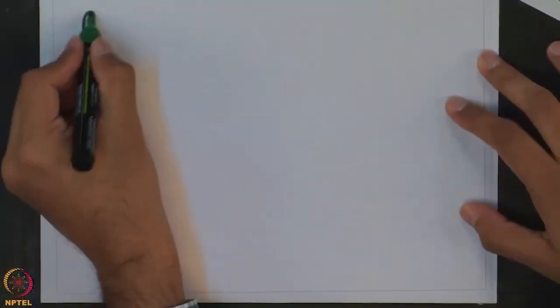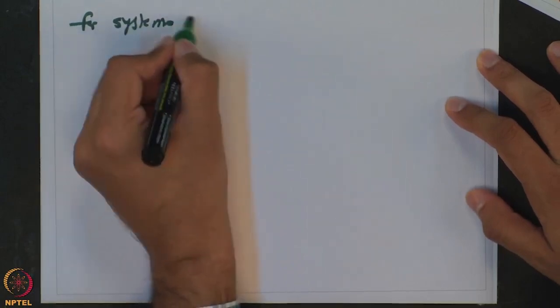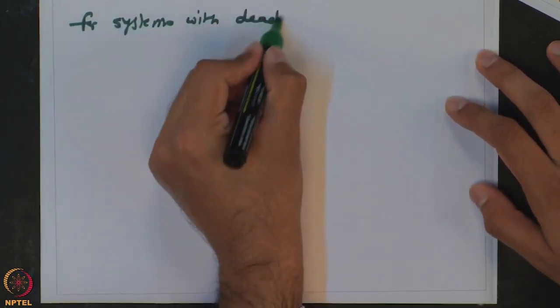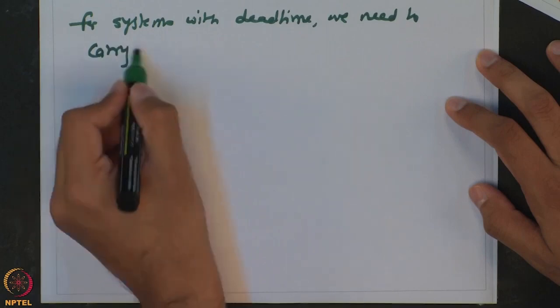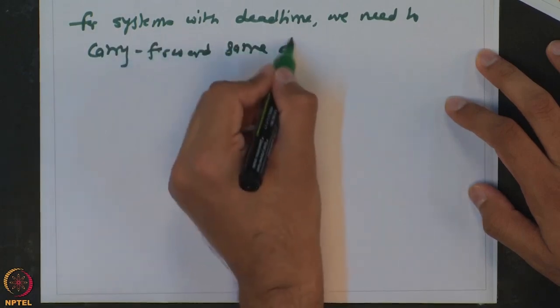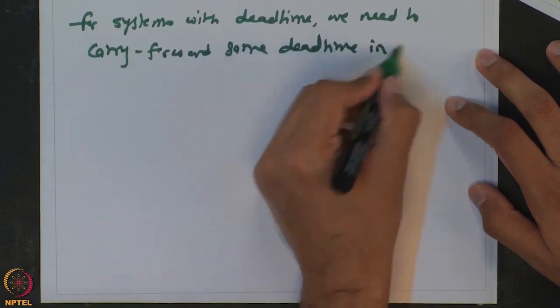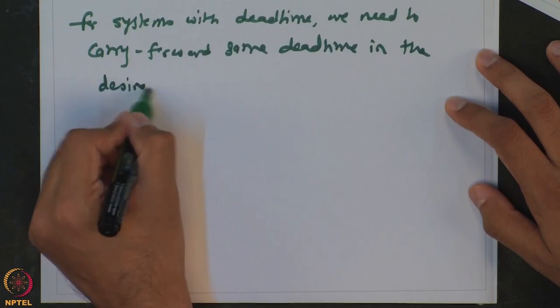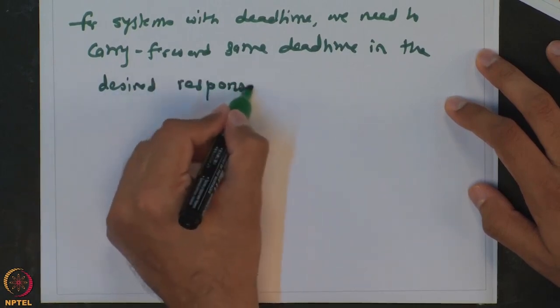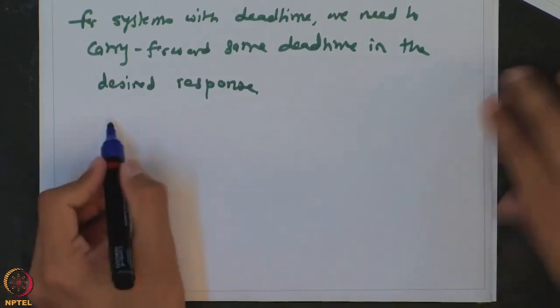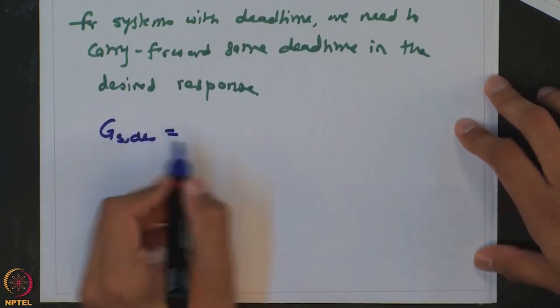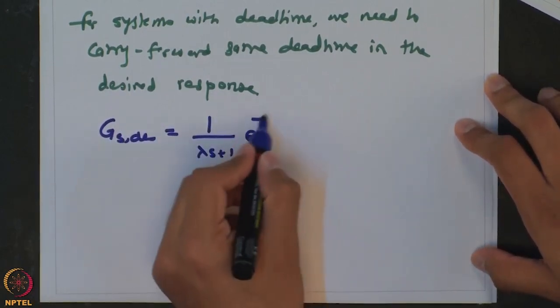For systems with dead time, we need to carry forward the same dead time in the desired response in order to get a practical controller. So for the same case, our Gs_desired should have been 1 over (λs + 1) · e^(−Td·s).